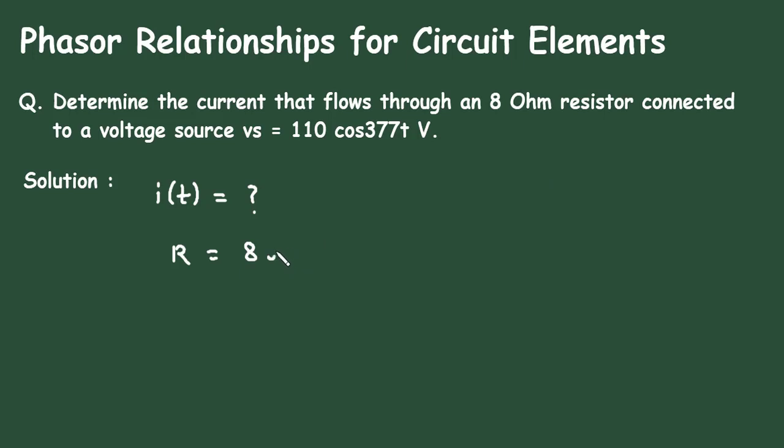Also, the value of voltage is given. Vs is equal to V of T is equal to 110 cos 377T volts.